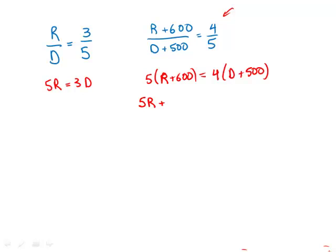5r plus 5 times 600 is 3,000, equals 4d plus 4 times 500 is 2,000. And right away what I'm going to do is just subtract 2,000 from both sides. So what I get is 5r plus 1,000 equals 4d.